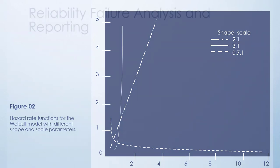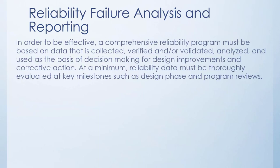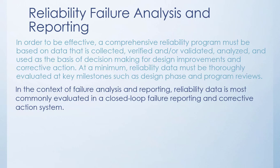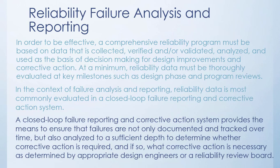How do we analyze reliability and report it? In order to be effective, a comprehensive reliability program must be based on data that is collected, verified and/or validated, analyzed, and used as the basis of decision making for design improvements and corrective action. At a minimum, reliability data must be thoroughly evaluated at key milestones such as the design phase and program reviews. In the context of failure analysis and reporting, reliability data is most commonly evaluated in a closed-loop failure reporting and corrective action system. This system provides the means to ensure that failures are not only documented and tracked over time, but also analyzed to a sufficient depth to determine whether corrective action is required, and if so, what corrective action is necessary, as determined by appropriate design engineers or a reliability review board.